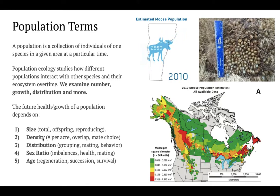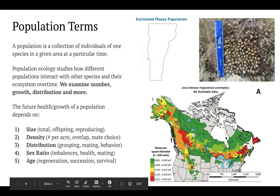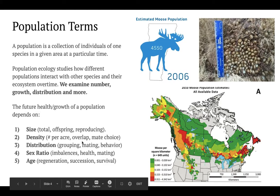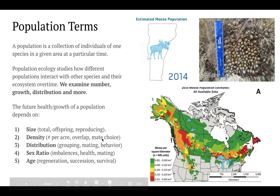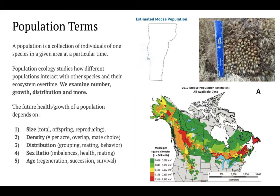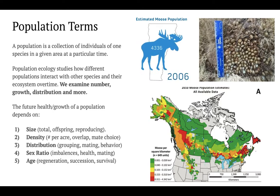We can also talk about density — the number of moose per acre or square kilometer. The moose density in Vermont is quite low. This is important for overlap of different individuals and mate choice, which can influence overall population size. It's not just the number, but how spread out or how concentrated individuals are.